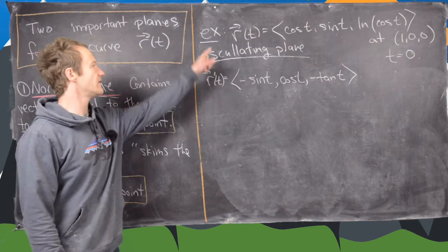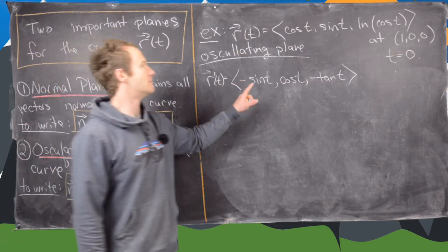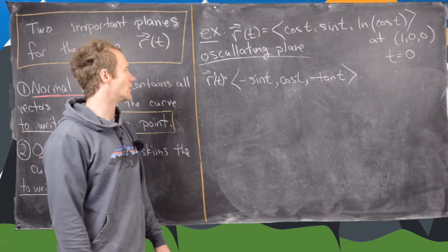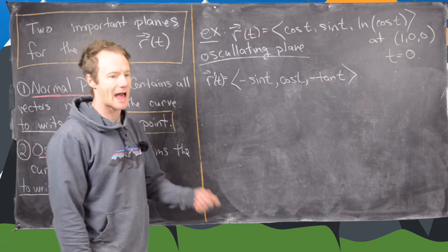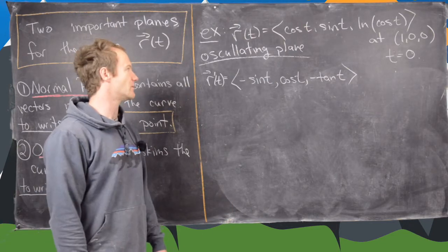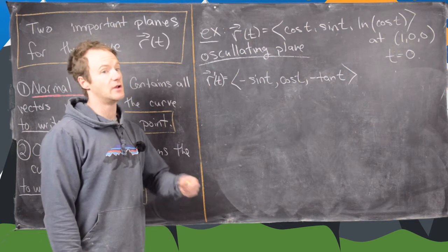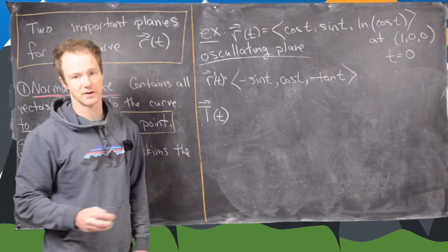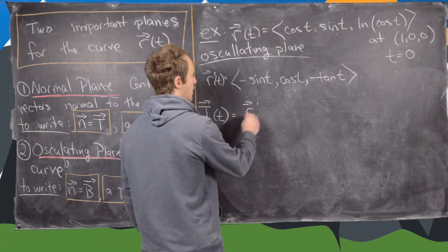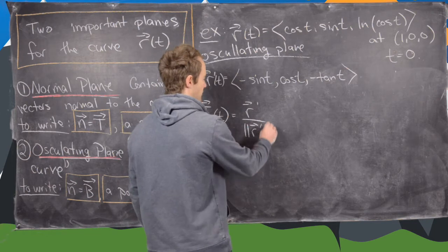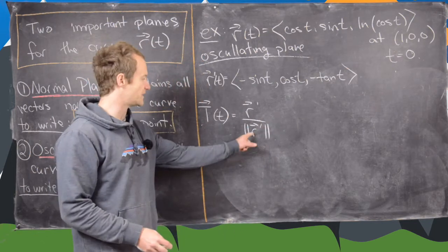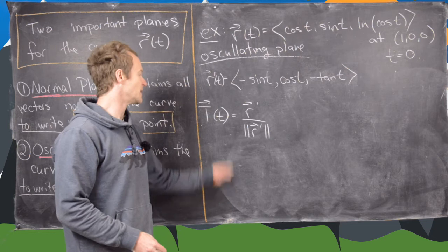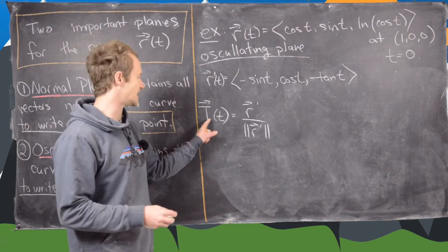Previously we found that the derivative of the function defining our curve was given by (−sin t, cos t, −tan t). We evaluated that at 0 and got a tangent vector at t equals 0, which happened to be a unit vector. But we want something more general in order to find the normal vector and the binormal vector, so we need to find the unit tangent vector at an arbitrary point, which is r′ divided by the magnitude of r′.